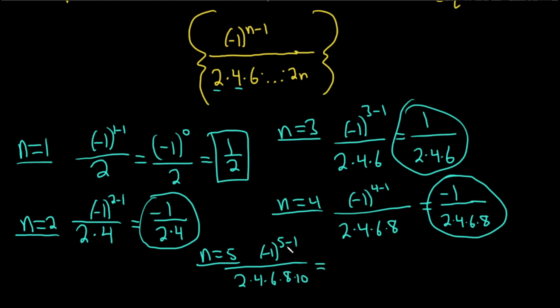This is negative 1 to the 4th, which is negative 1 to an even power, which is 1. So we have 1 over 2, 4, 6, 8, 10.